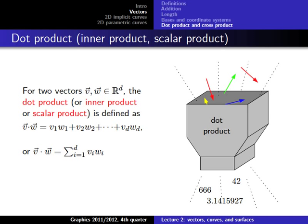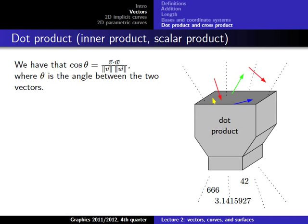The input to the scalar multiplication is a vector and a scalar, and the output is a vector — a very common multiple-choice question in exams. The dot product, by contrast, takes two vectors as input and outputs a scalar. It is defined as the sum of the products of corresponding coefficients: for a 3D vector, v₁w₁ + v₂w₂ + v₃w₃. This gives a single scalar value.